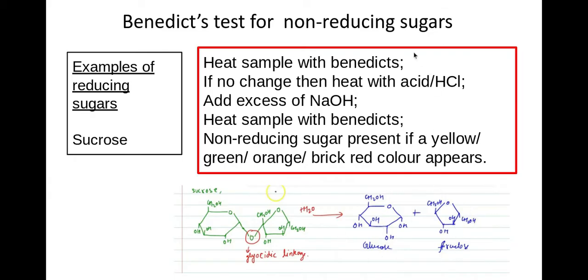So you test for reducing sugars, when you get a negative test you'd heat with hydrochloric acid and then add excess sodium hydroxide to neutralise the acid and then you would test as normal for reducing sugar and you would get the same colours of the yellow, green, orange, brick red precipitate.